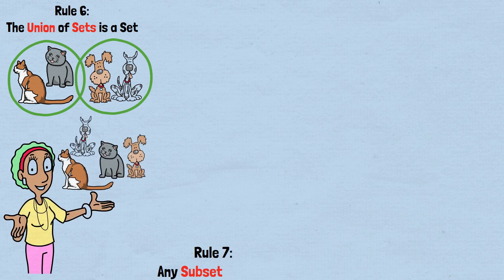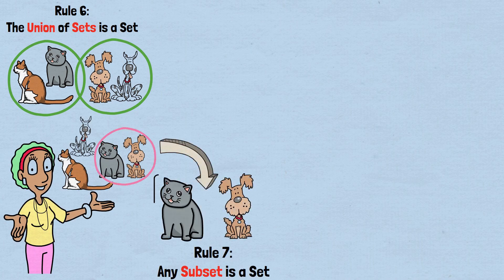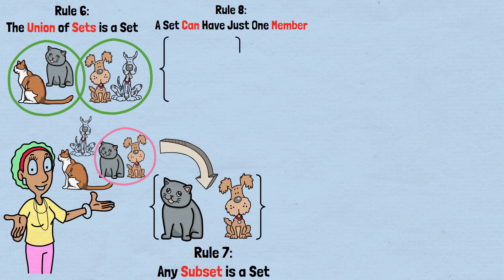Rule seven, any subset is a set. If you take some members of a set, they form another valid set. Rule eight, a set can have just one member. The set {LeBron James} is a set with one member, called a singleton set.